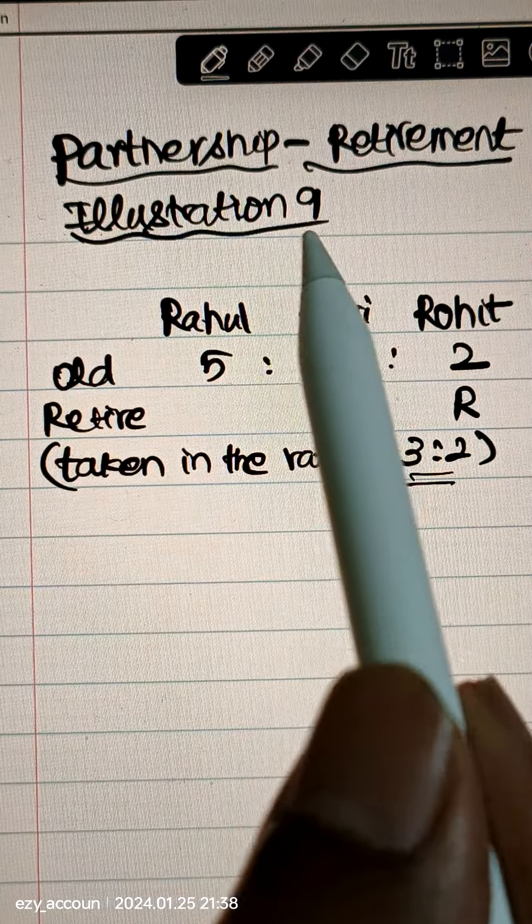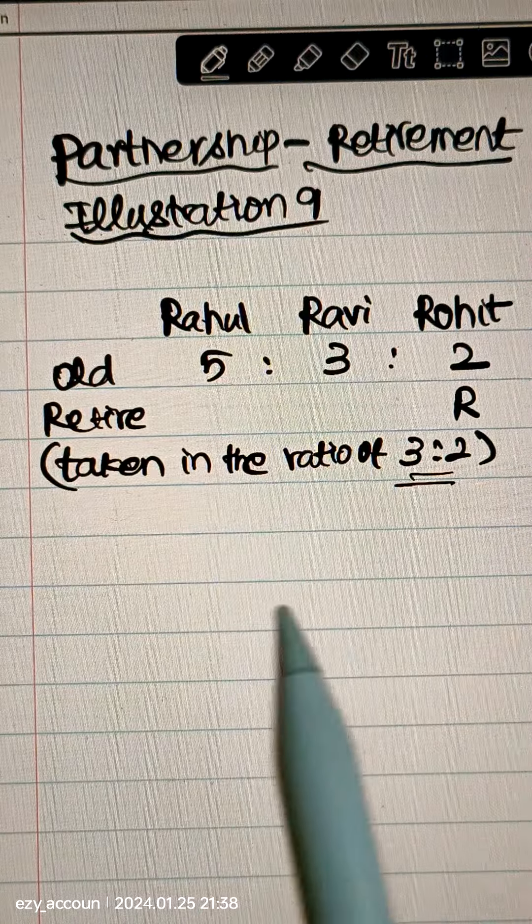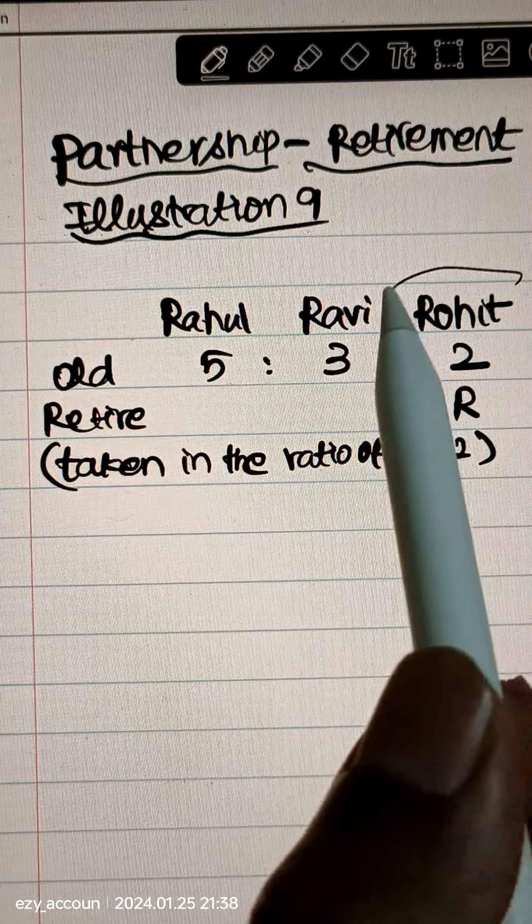In partnership retirement, illustration 9, three partners are there. Rohit retires, the last partner.